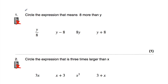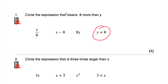Question number one says: circle the expression that means 8 more than y. Now if we want to find 8 more than a number, we add 8 to it, so we're looking for y plus 8. Here we've got y divided by 8 — that's not 8 more than y. This is y take away 8, so that's 8 less than y. This is 8y, that means 8 times y. And this is y plus 8, which means 8 more than y. So circle the expression that means 8 more than y — it's y plus 8, adding 8 to y.